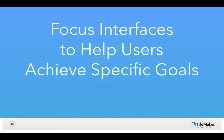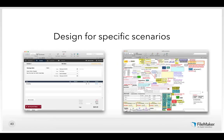Focus interfaces to help users achieve specific goals. We are designing solutions to enable specific people to accomplish specific business goals. As much as possible, focus your interfaces to enable users to accomplish specific goals in specific scenarios. Start by figuring out who are the people in the problem space. If you're designing an invoicing app, it may be the owner, the person creating the invoice, the accountant reviewing invoices, and the customer.